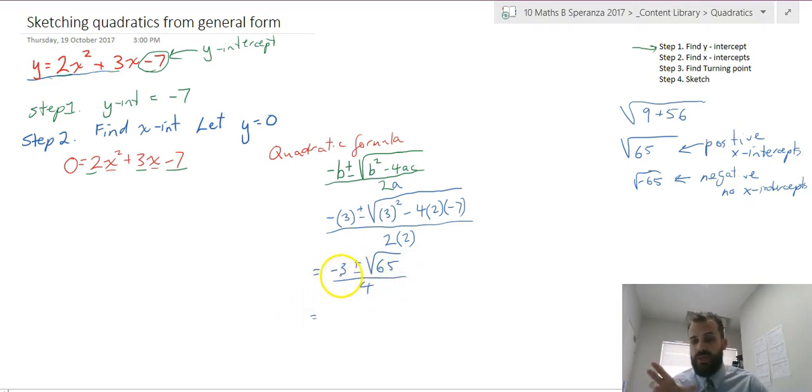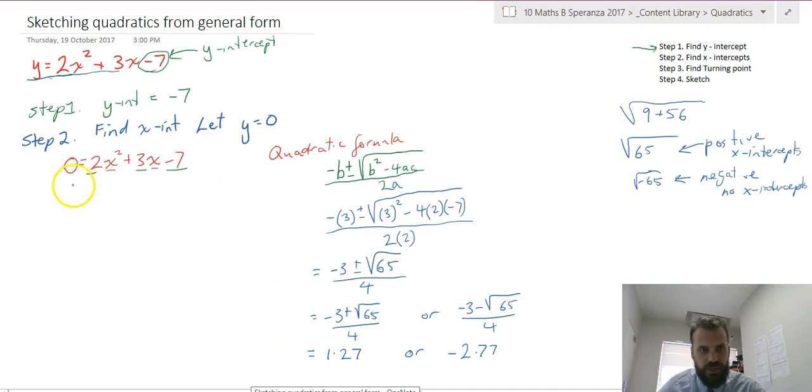Now we need to type that into our calculator two ways. We need to type it in as negative 3 plus root 65 on 4, and also as negative 3 minus root 65 on 4. I'm going to type those two into my calculator. Calculator gives me two answers: x equals 1.27 or negative 2.77.